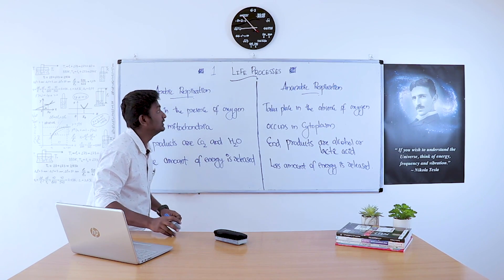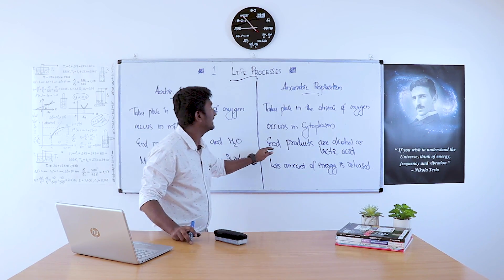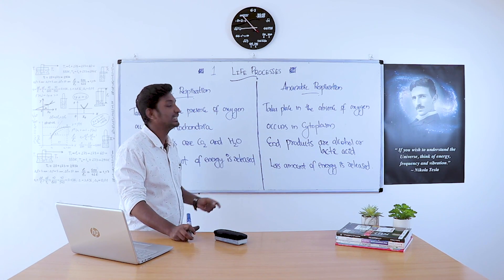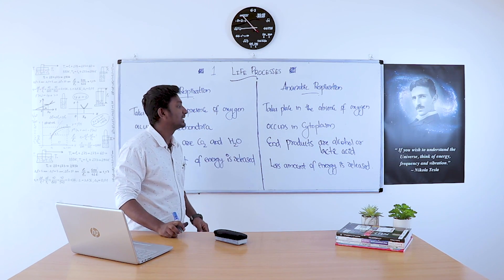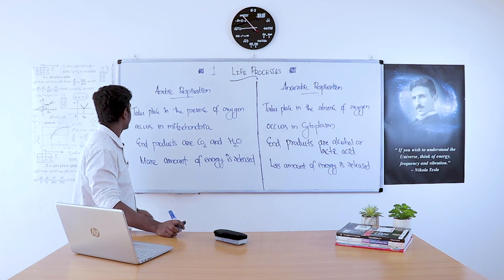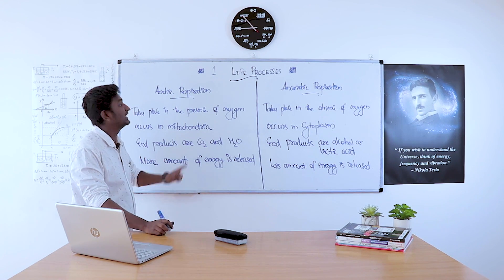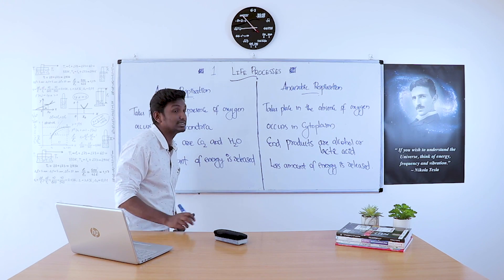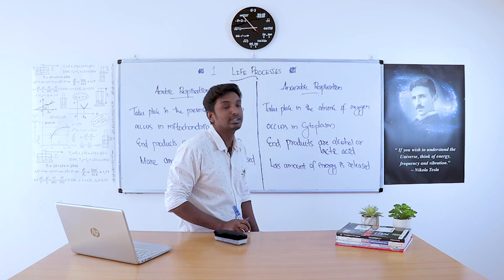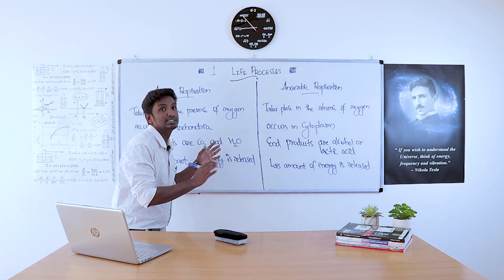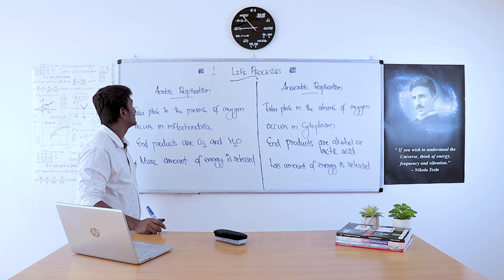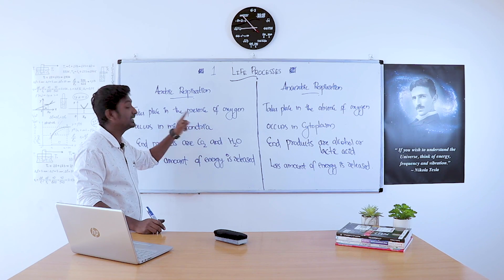In aerobic respiration, the end products are CO₂ and H₂O. In anaerobic respiration, the end products are alcohol or lactic acid. More energy is released in aerobic respiration, while less energy is released in anaerobic respiration.